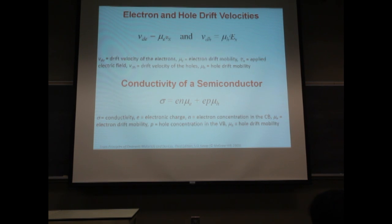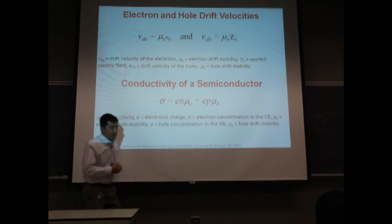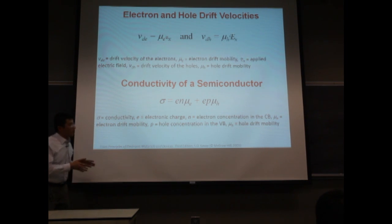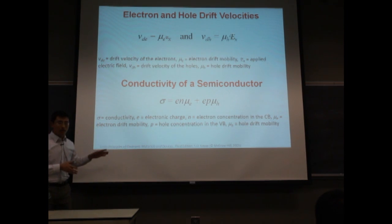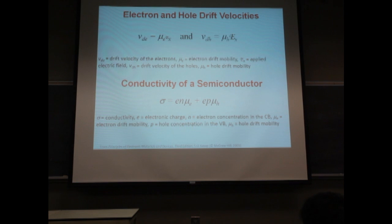Conductivity is contributed by two types of carriers: majority and minority. Both contribute. However, in some semiconductors, we don't consider the contribution of minority carriers because majority carriers have a much higher density than minority carriers.